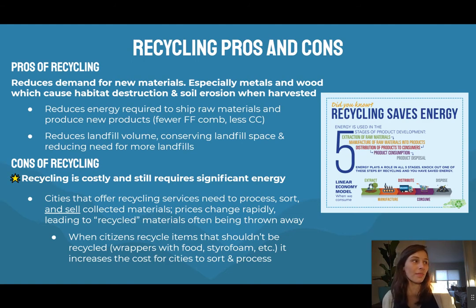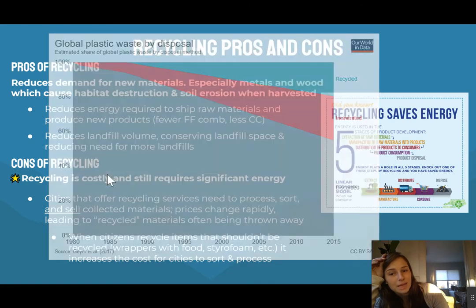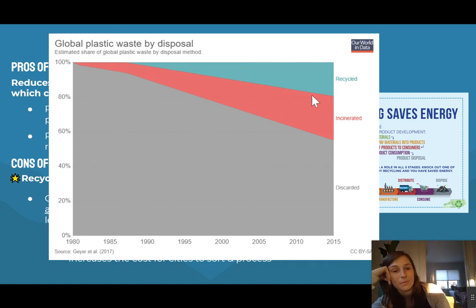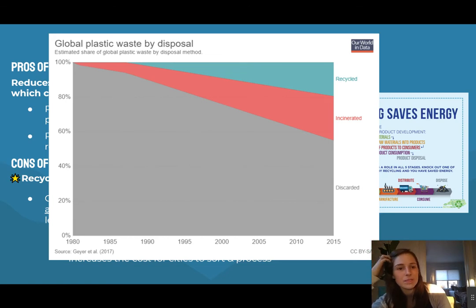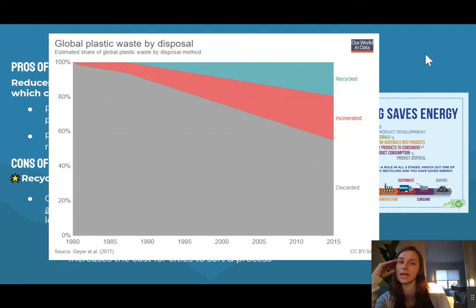This diagram shows the reality of how much global plastic waste ends up being recycled, incinerated, versus discarded. Some of this is people who don't recycle, but some is also those who think they're recycling but it ends up discarded because it couldn't be sold. Honestly this is a somewhat horrifying number, though the numbers are increasing.